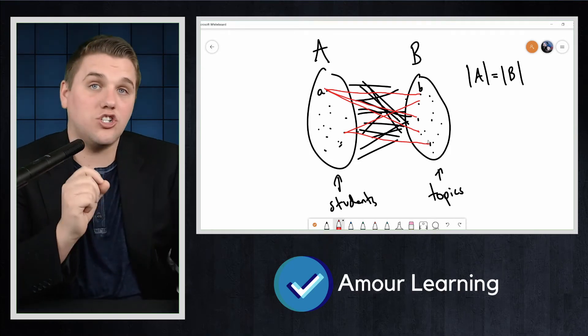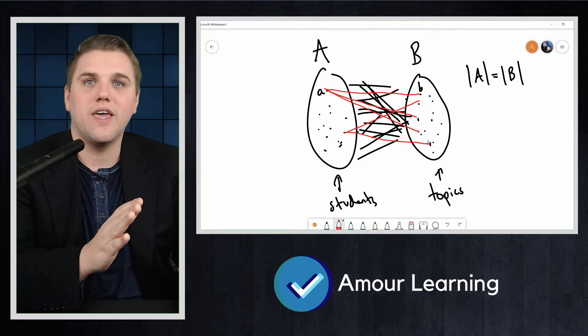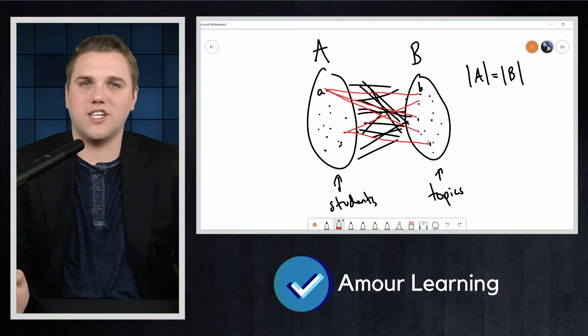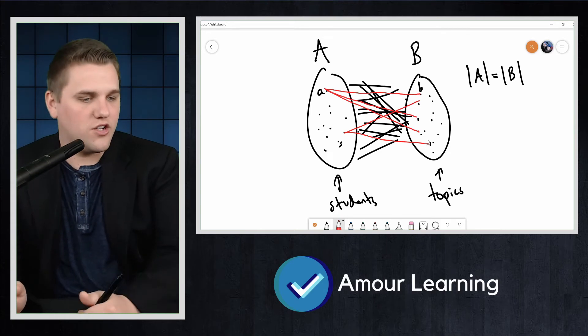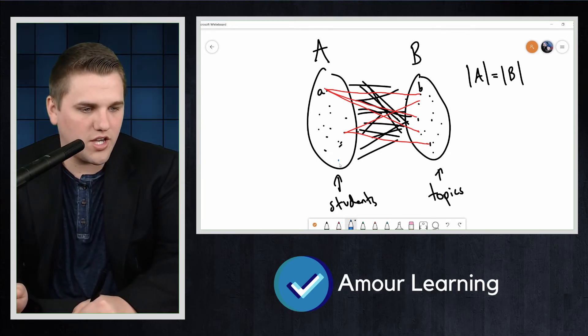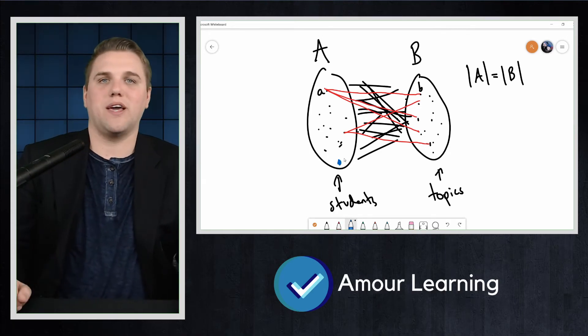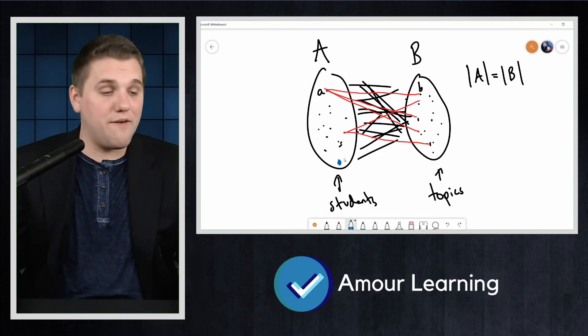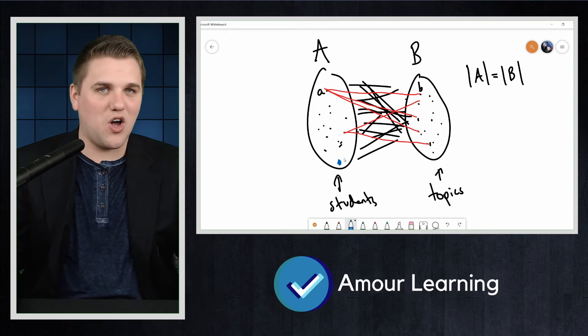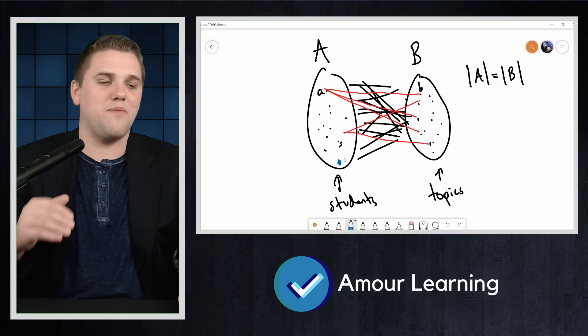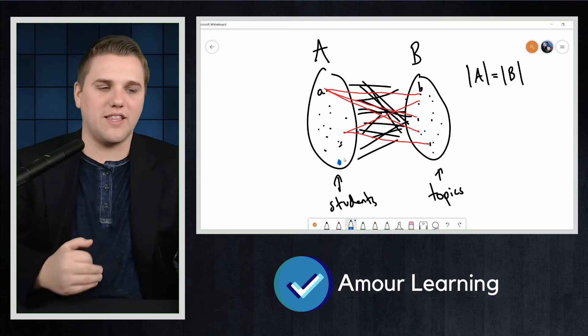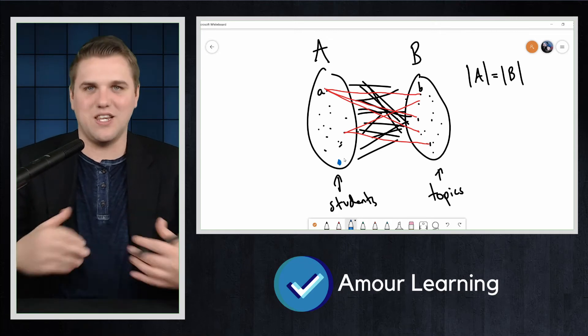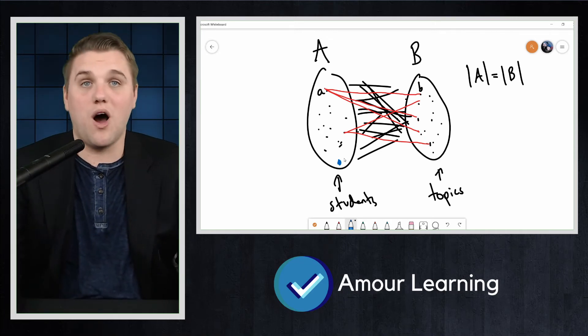One way G could not have a matching is if there's a vertex in A not adjacent to any vertex in B. So maybe you have a loner vertex over here, a student who picked no topics, so having degree zero. That would mess up everything, because then we can't give every student the topic that they wanted, because there's a student there that didn't pick any topics. So we can't give him what he wants.